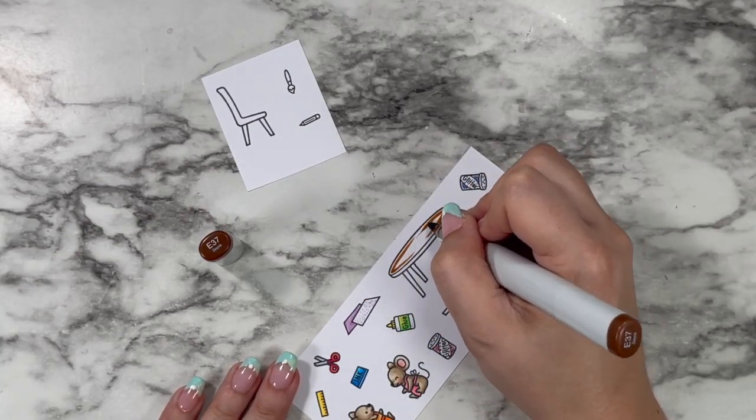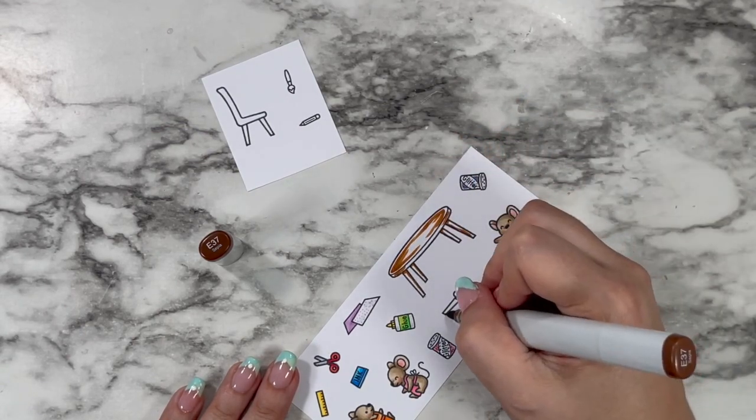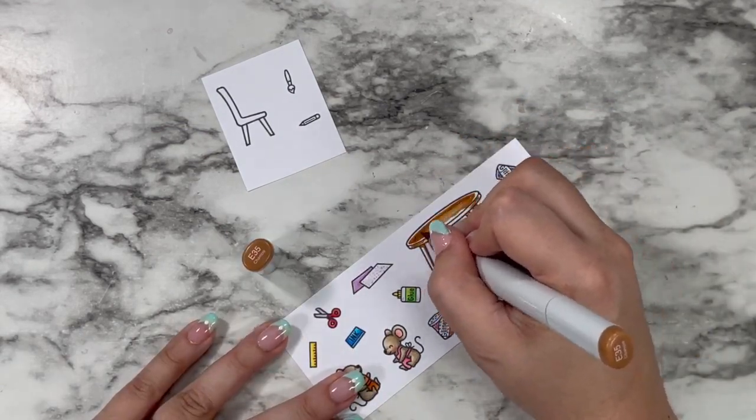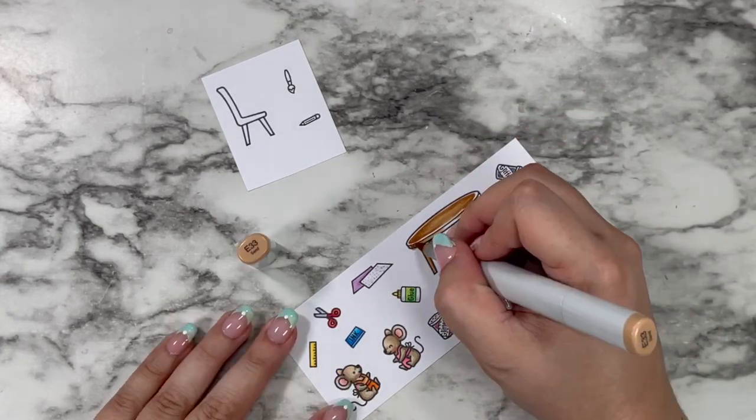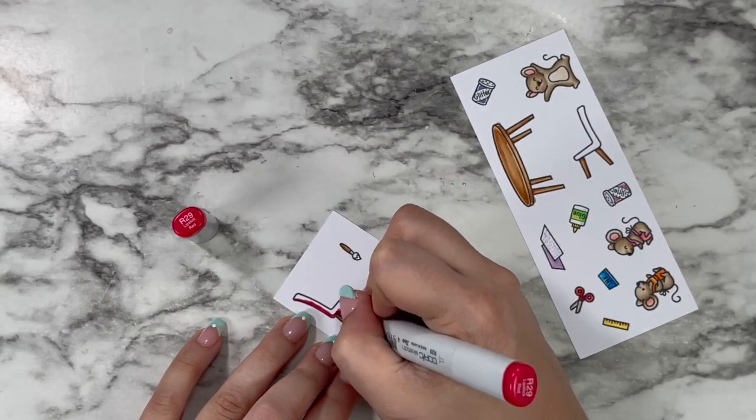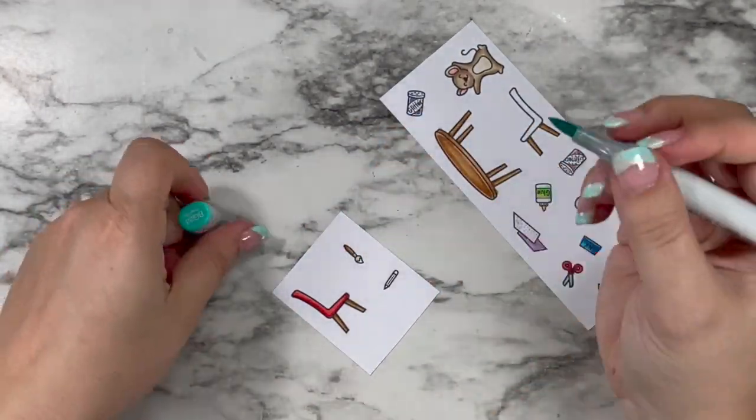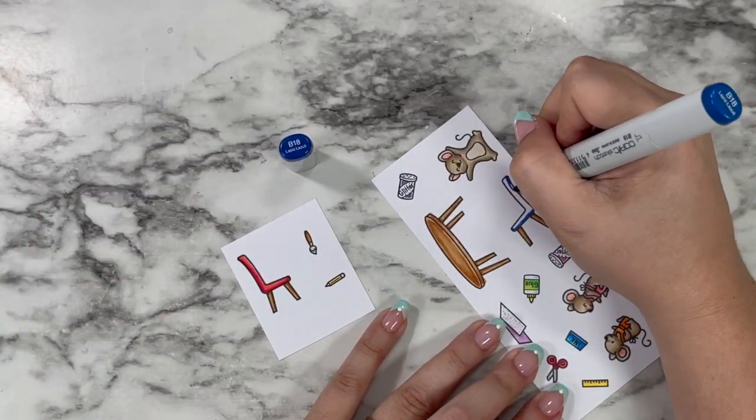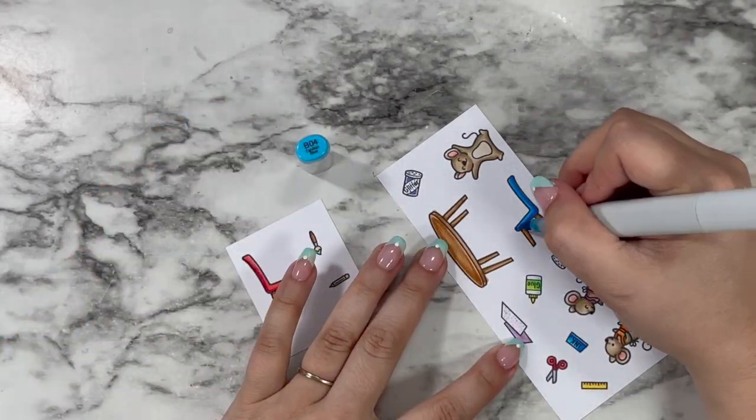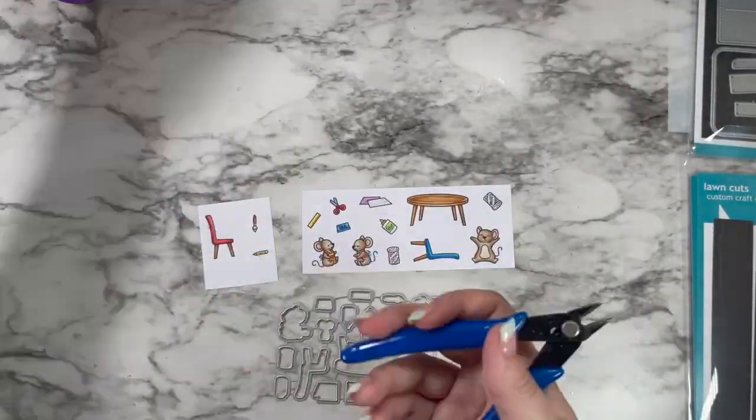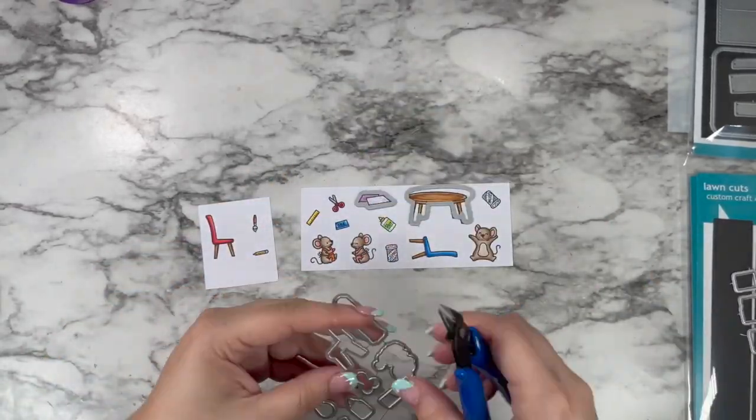I'm also going to end up going back in to add in even more little accessories at the end just to fill the scene out even more. But I decided to give them a little wooden table and I did the legs of the chairs in the same kind of wood grain colors, and then the seats of the chairs I did one that was red and one that was blue. I really wanted to create kind of a rainbow effect across the card going from the reds over to the blues and purples on the other side.